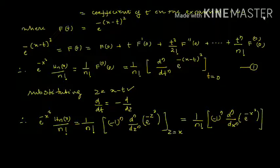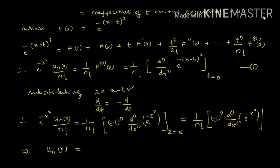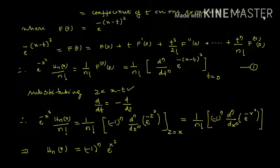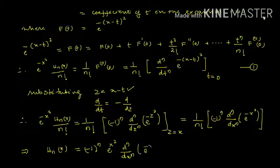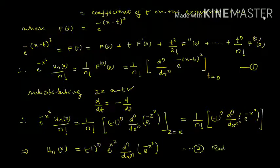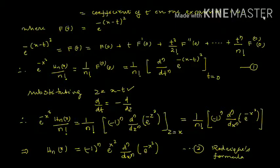Dividing e^(-x²) and multiplying n! to the right-hand side, we get Hn(x) = (-1)^n · e^(x²) · d^n/dx^n of e^(-x²). This is equation 2, known as Rodrigues' formula for Hn(x).